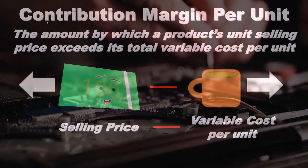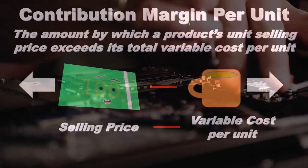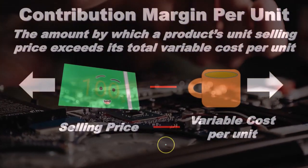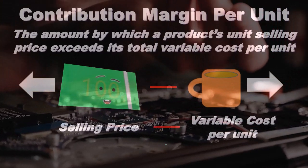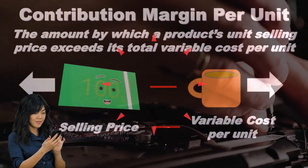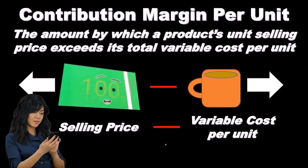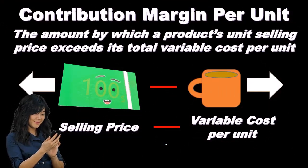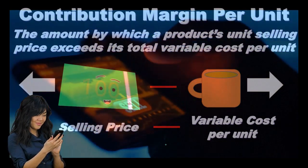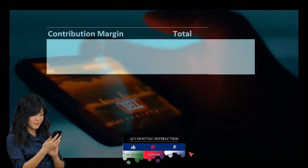Note that we've also seen the contribution margin — not per unit, but total — when we looked at the contribution margin income statement, which was total revenue minus total variable costs. The contribution margin per unit is the building block that gets us there. We can take the contribution margin per unit, multiply by number of units sold, to get to the total. Going the other way, we can take the contribution margin per unit, look at how many units we expect to sell, and make predictions for a projected contribution margin income statement. That's the power of this calculation.